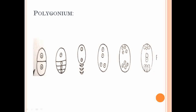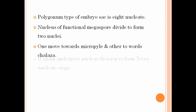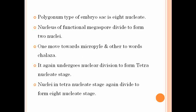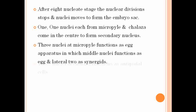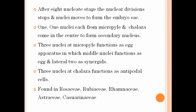The Polygonum type of embryo sac has the micropylar megaspore as the active one, and it is an 8-nucleated embryo sac. This type is observed in the families Rosaceae, Rubiaceae, Rhamnaceae, Asteraceae, and Coelurenaceae. Next, let's see the second type of monosporic embryo sac, the Oenothera type.